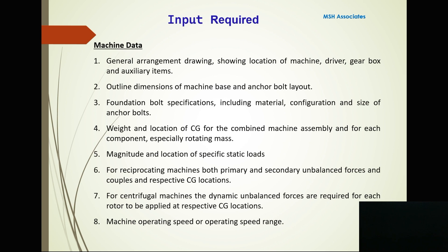To design a machine foundation, first we need machine data. This includes: general arrangement drawings showing the location of the machine, driver, gearbox, and auxiliary systems; outline dimensions of the machine base; anchor bolt layout and specifications including material, configuration, and size; weight and center-of-gravity location of the complete machine assembly; for each component, especially rotating mass, the magnitude and location of specific static loads; and for reciprocating machines, both primary and secondary unbalanced forces and couples. For centrifugal machines, the dynamic unbalanced forces are required for each rotor.